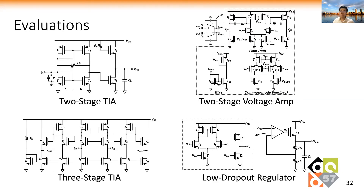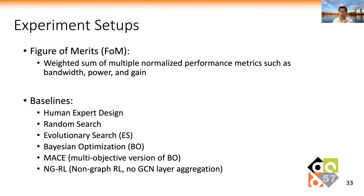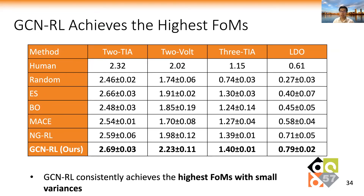We evaluate the performance of GCNRL on four circuits, including a two-stage transimpedance amplifier, a two-stage voltage amplifier, a three-stage transimpedance amplifier, and a low dropout regulator. We use the weighted sum of several normalized performance metrics such as bandwidth, power, and gain as a figure of merit, and compare our performance with multiple baseline algorithms including human expert design, random search, evolutionary search, Bayesian optimization, MACE (a multi-objective BO), and NGRL, which is reinforcement learning without GCN. The experiments show that GCNRL consistently achieves the highest figure-of-merit values with small variance.